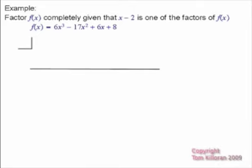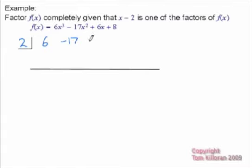Let's set up a little synthetic division. We know we're going to synthetically divide by a positive 2 because it's x minus 2 here. The coefficients, with no missing powers, would be 6, negative 17 for the x squared, 6 for the x, and 8 finally.